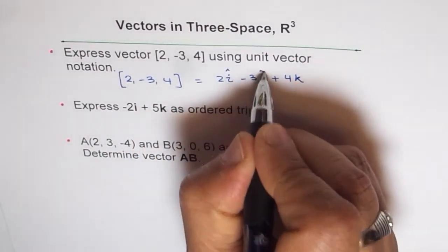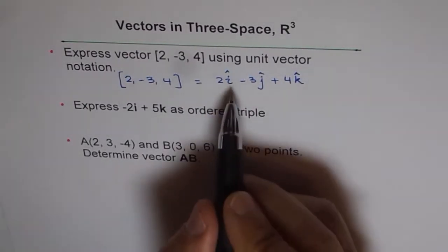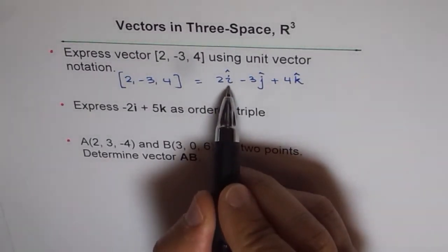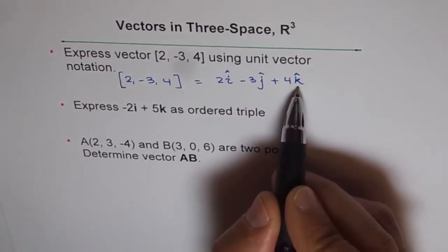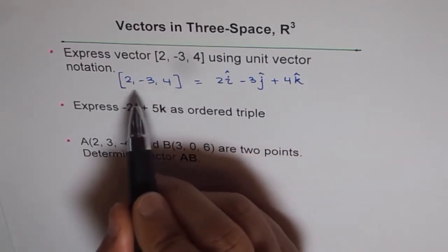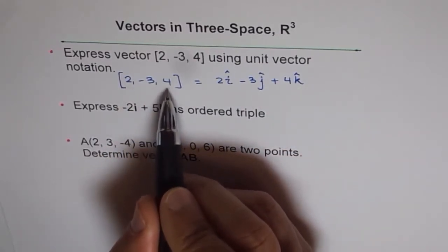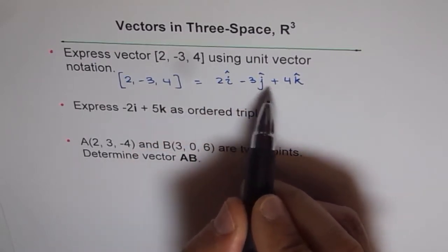For a unit vector, I prefer to write with this symbol on top. That gives a unit vector i along the x-axis, j along the y-axis, and k is a unit vector along the z-axis. So our ordered triple [2, -3, 4] is equivalent to 2i - 3j + 4k.